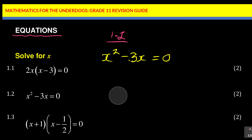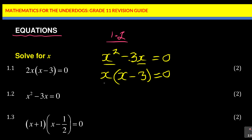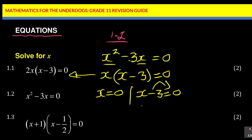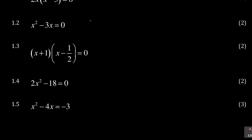Same thing here: x is common. You write x, then open a bracket. x into x squared gives you x (canceling one x), and x into negative 3 gives minus 3. So you have x(x minus 3) equals zero. Therefore, either x equals zero or x minus 3 equals zero, giving x equals 3. Two answers. Not difficult.